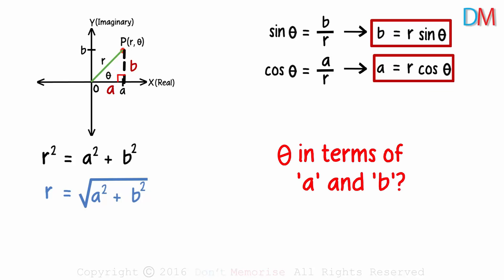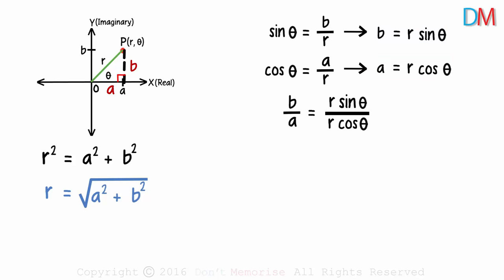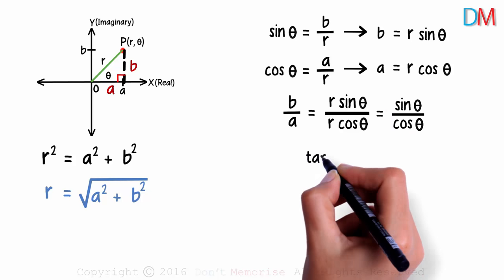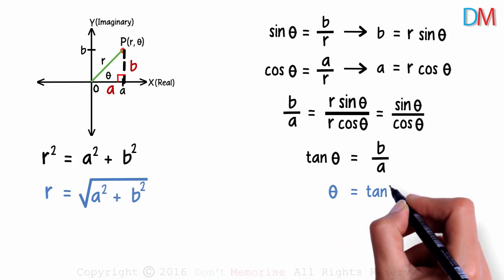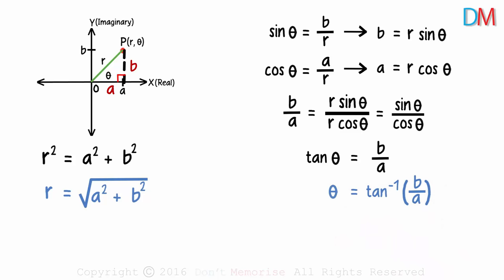But we still don't have theta in terms of a and b. But are these two enough to give us that? Yes, all we need to do is divide b by a. R gets cancelled and we get b over a as sin theta over cos theta. And what's sin over cos? It's tan. Tan theta will equal b over a. Hence theta will equal tan inverse of b over a. That's theta in terms of a and b.